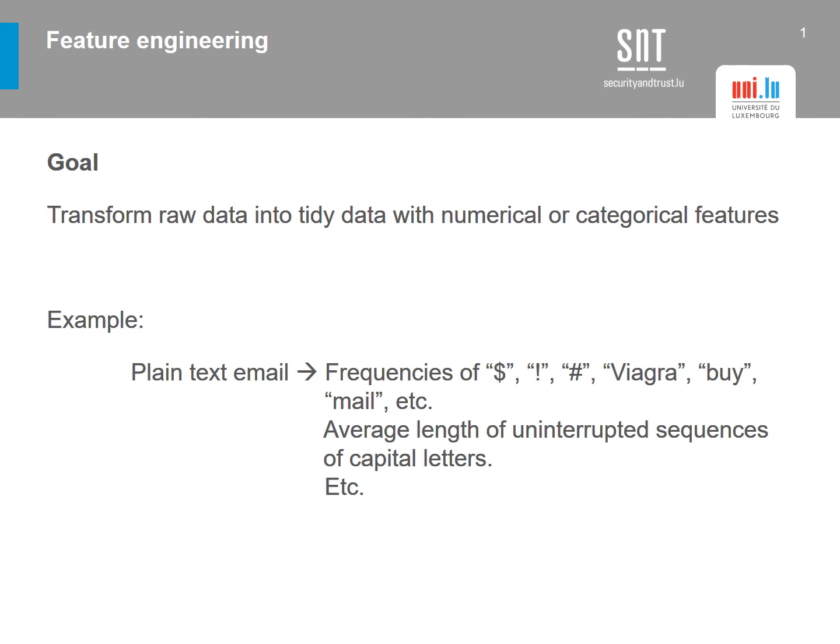In feature engineering, the goal is to transform our raw data into tidy data with numerical or categorical features. There are different parts. The first is raw data, which is the data we have at the beginning. In the spam filter example, we have a formatted email with a subject, a body that may be HTML, a sender's and recipient's email address, and a lot of different metadata. This raw data is not directly usable for a machine learning model, so we have to transform it into something the model can understand.